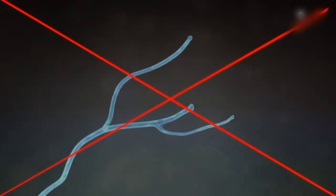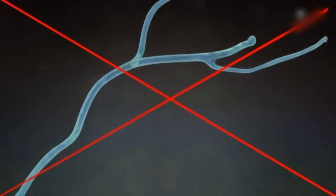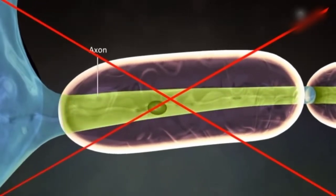The dendrites receive impulses from the adjoining neurons. The other extension from the cell body or soma is a single branched extension called an axon.